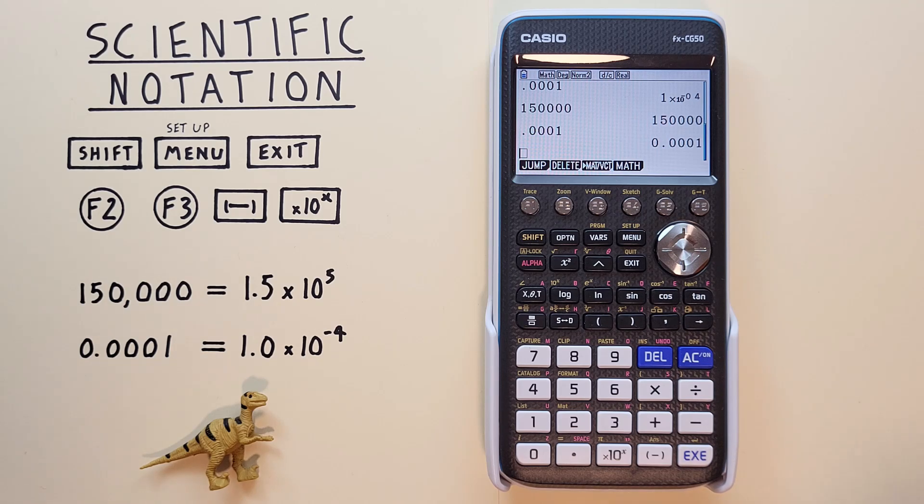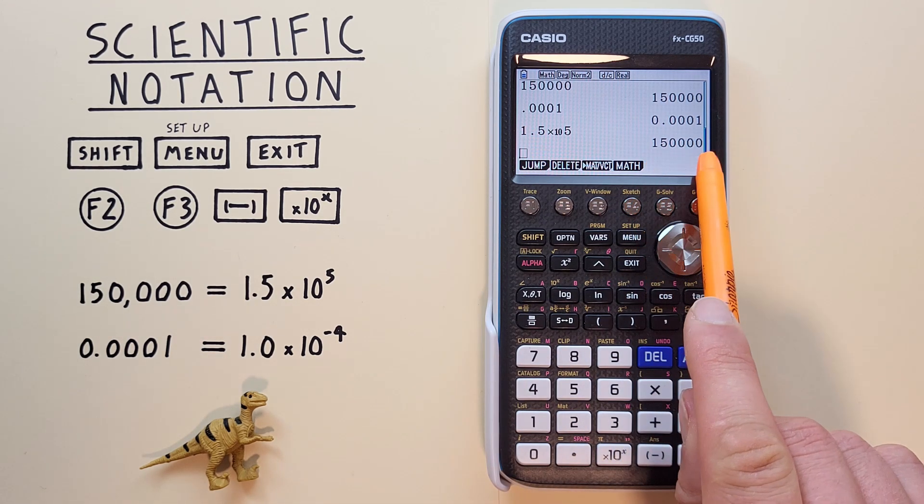What if we want to enter a number directly into scientific notation? That's where we can use the times 10 to the X key. So if we're given, for example, 1.5 times 10 to the power of 5, and want to convert that to normal digits, we can enter it as 1.5, then the times 10 to the X key, and then 5, hit EXE, and see that converts it to 150,000.